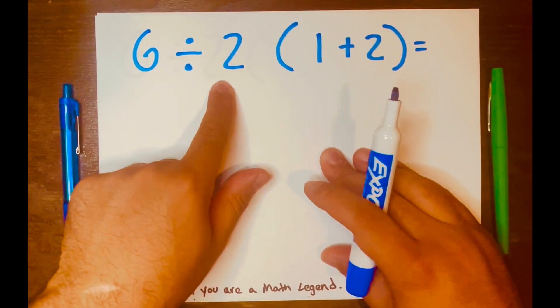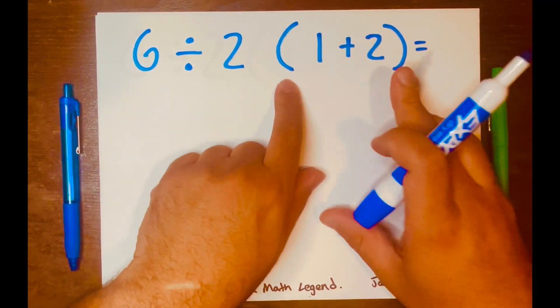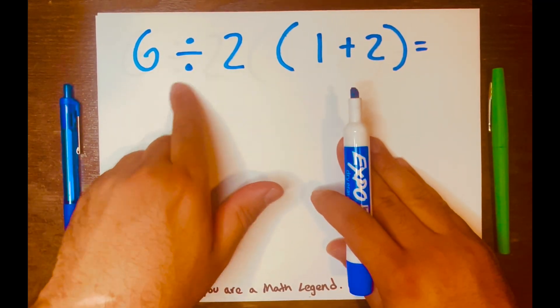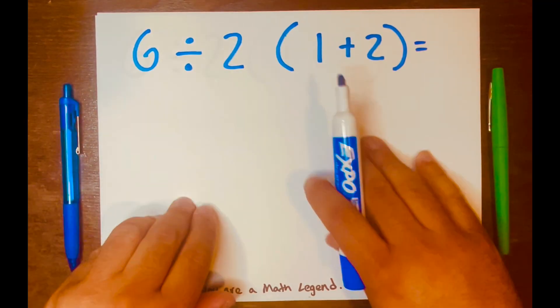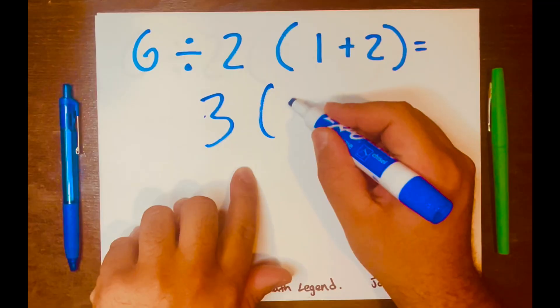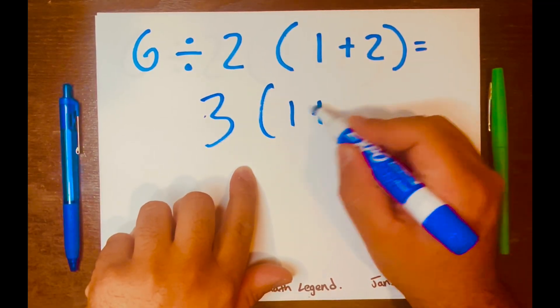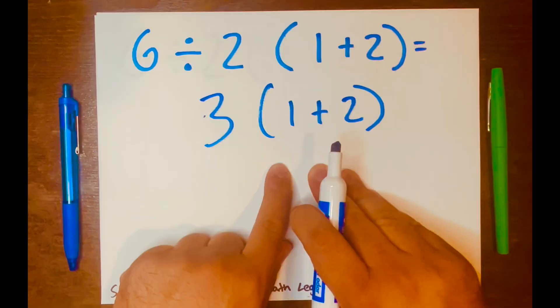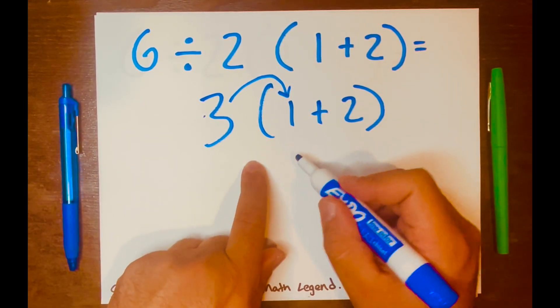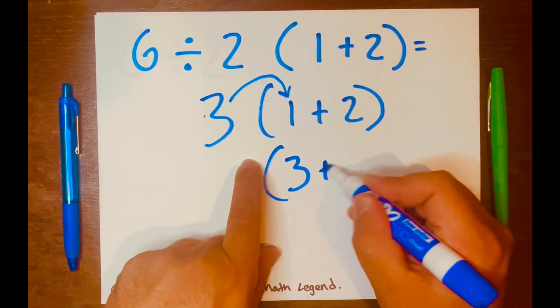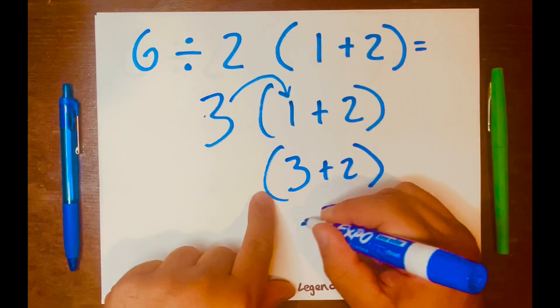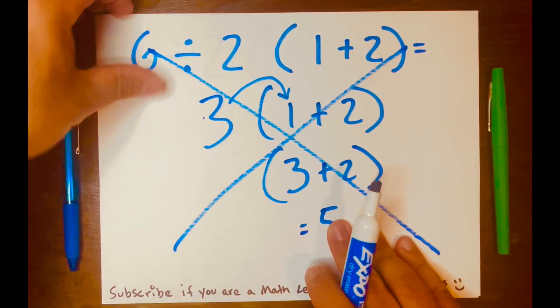6 divided by 2, and then you have 1 plus 2 inside these parentheses. All right, some people will do this. They will divide this, 6 divided by 2, which is 3, right? And they'll bring down the brackets, the 1 down, the plus down, and the 2 down, and then they'll multiply 3 times 1, which is 3, plus 2, and then 3 plus 2 is 5. So, this is wrong. The answer is not 5.